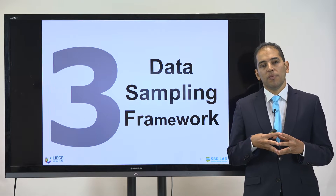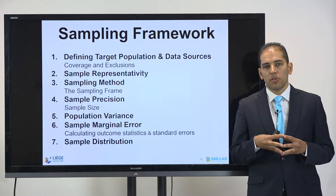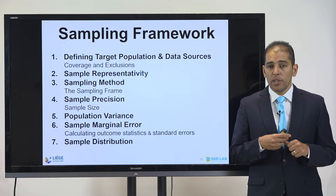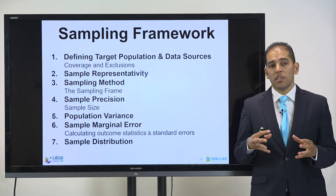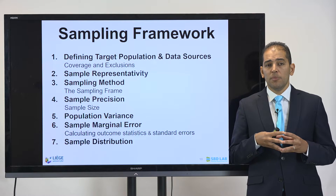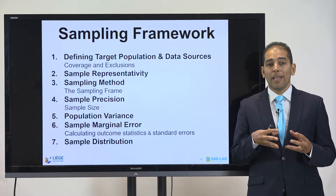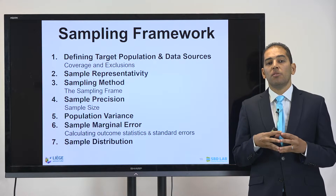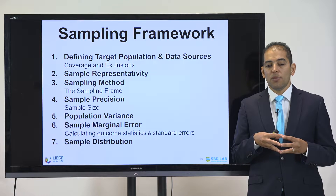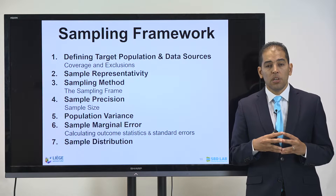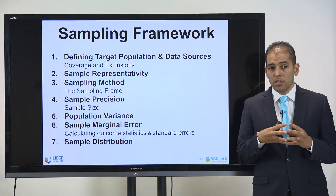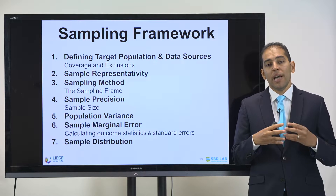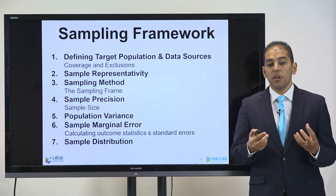An important point of data collection is to have a data sampling framework. A framework is a group of descriptions that will describe our sampling technique. We need to define the target population, the data sources, the coverage, and the exclusions. We also need descriptions about the sample representativity, the sampling method and frame used, the sampling precision — mainly referring to sample size — the population variance and sample marginal error for calculating outcome statistics and standard errors, and finally the sample distribution. Those seven items form your sampling framework.